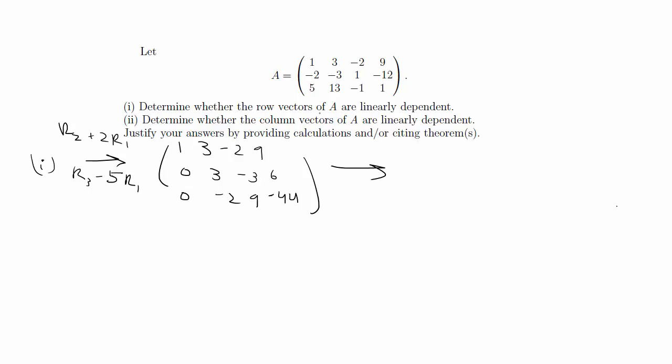Then this next transformation I did was 1/3rd r2. And that gives you 1, 3, negative 2, 9. 0, 1, negative 1, 2. And 0, negative 2, 9, negative 44. So this gives me a leading one on the second row, and that makes it easier for me to get rid of the rest of the numbers on this column.